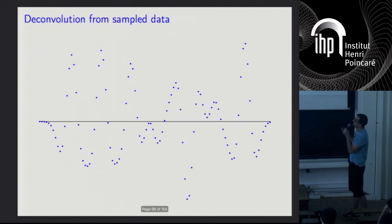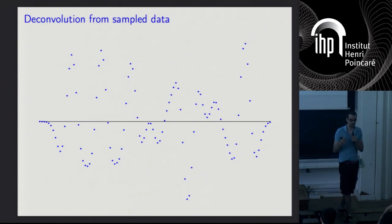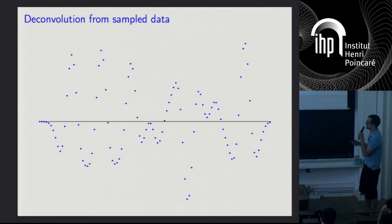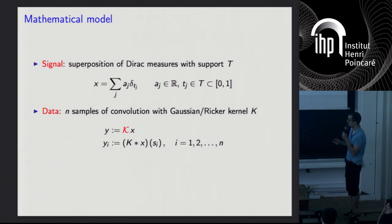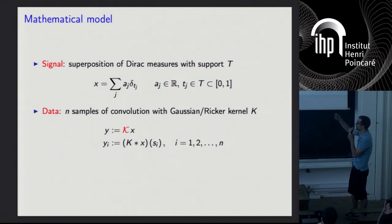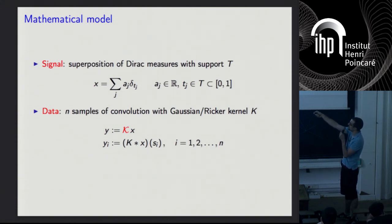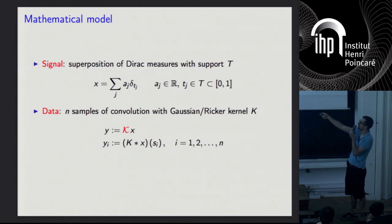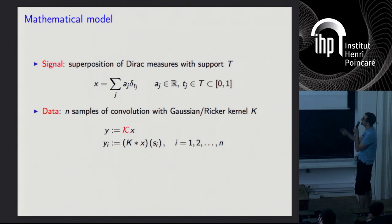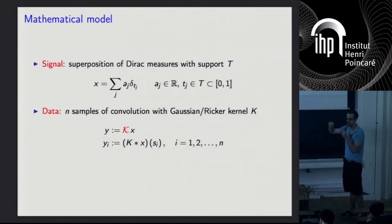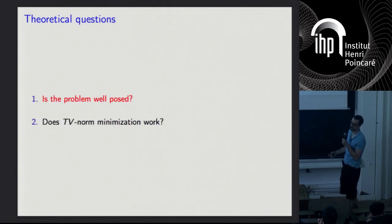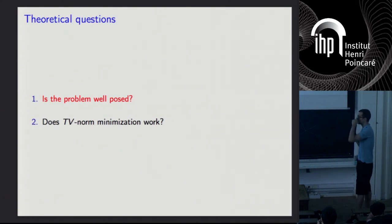That was the story about deconvolution when the convolution kernel is exactly low-pass and you sample uniformly at the Nyquist rate. Now we're going to look at what happens if we only have the samples. What can we say about what sampling patterns we need in order to deconvolve the signal directly from the sample data?